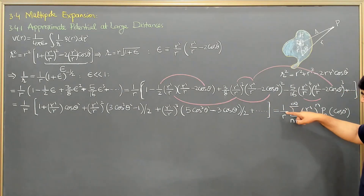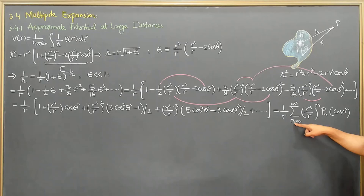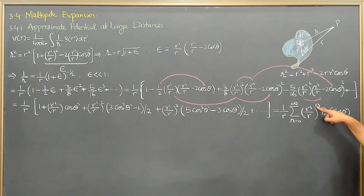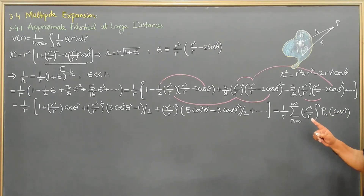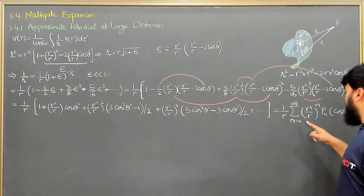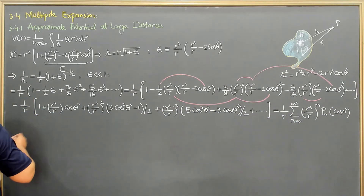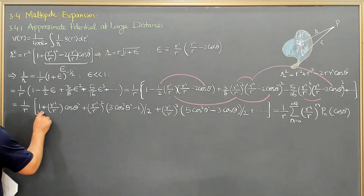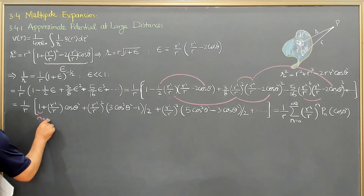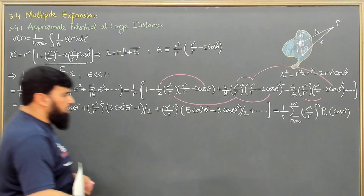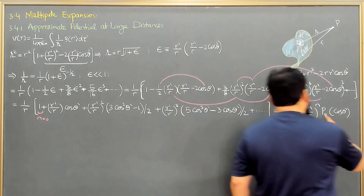When n is equal to 0, (r prime over r) to the power 0 becomes 1, and P_0 of cos theta is equal to 1. So this entire term becomes 1 — this is the n equals 0 term.